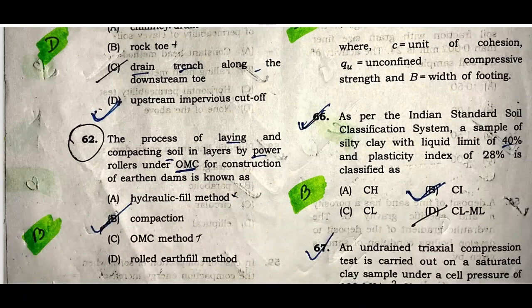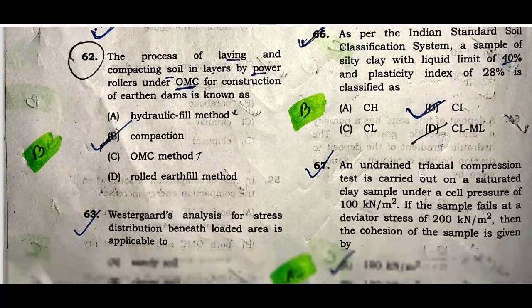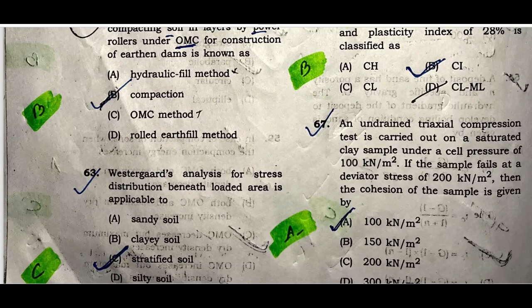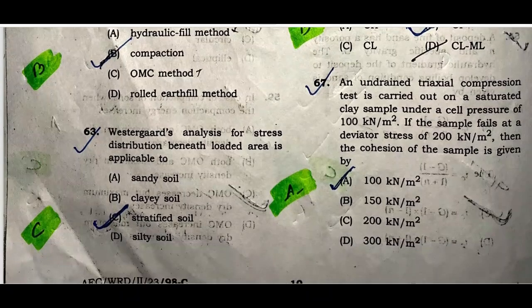Question sixty-four: The ultimate bearing capacity of a surface strip footing on clay according to Terzaghi's theory is 5.7C. Question sixty-six: As per Indian Standard soil classification system, a sample with silty clay having liquid limit 40% and plasticity index 28% falls in category CI. Option B is correct. Question sixty-seven: An unconfined triaxial compression test on a saturated clay under cell pressure 100 kN/m² fails at a deviatory stress of 200 kN/m². The cohesion of the sample is 100 kN/m². Option A is correct.